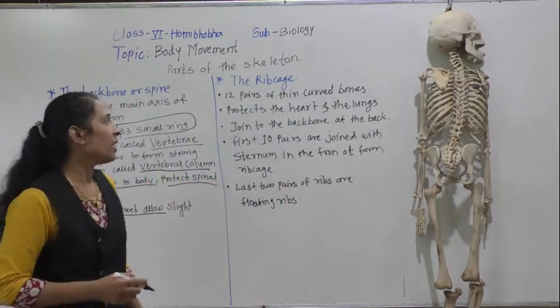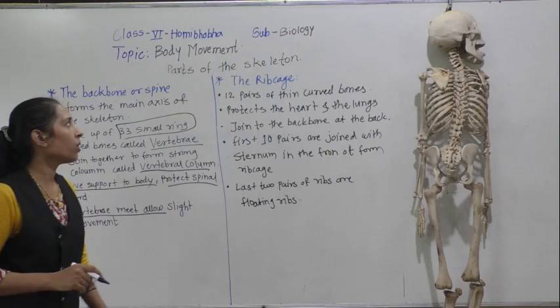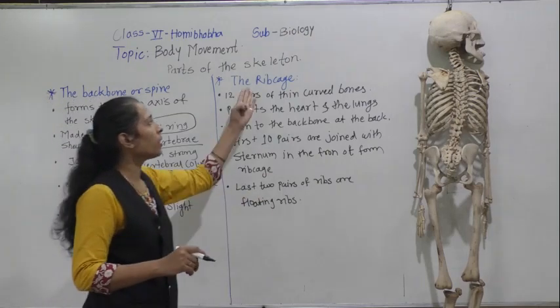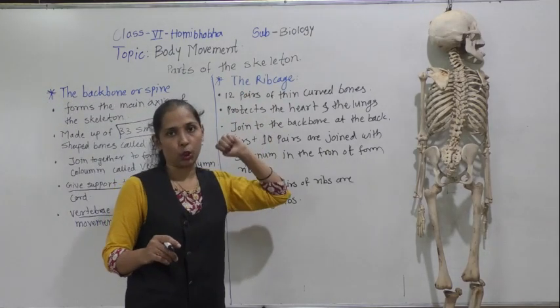To summarize: the backbone or spine consists of 33 ring-shaped bones. Each individual bone is called a vertebra. These vertebrae join together to form the vertebral column, which helps protect the spinal cord and give support to the body. Now let's move on to the next part of the skeleton — the ribcage.